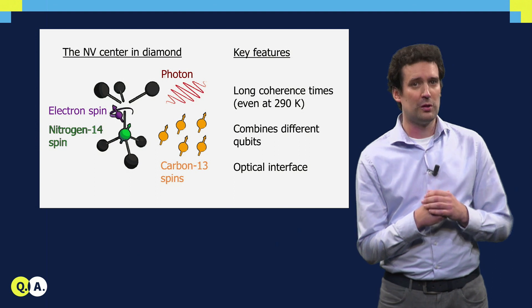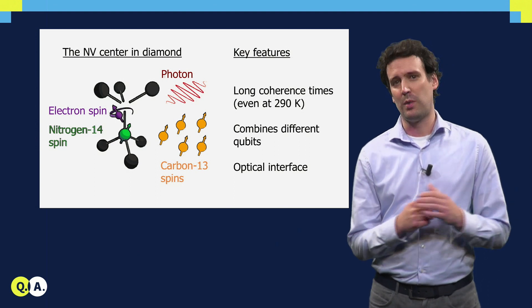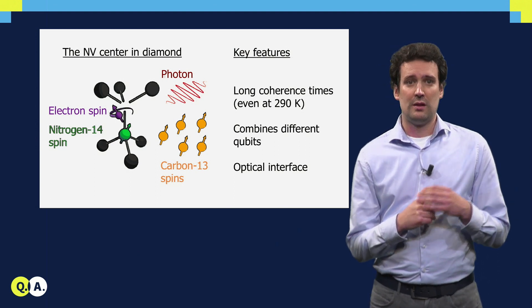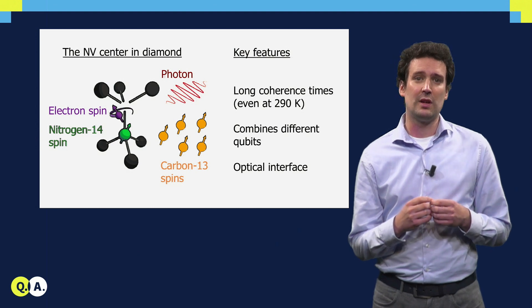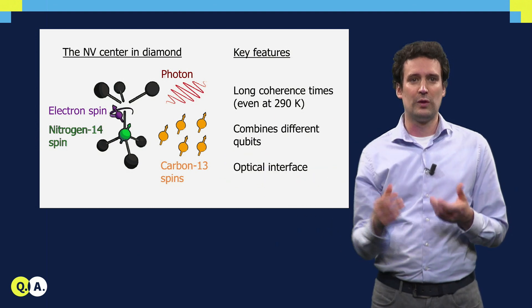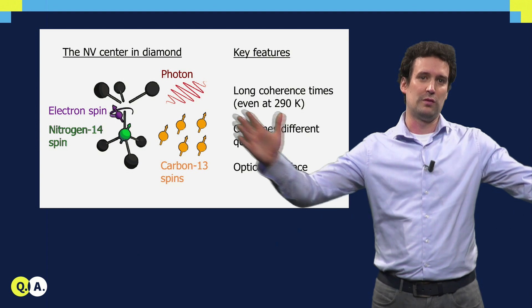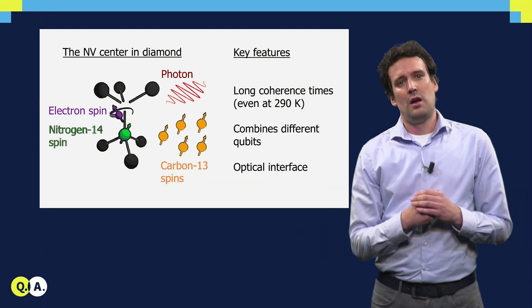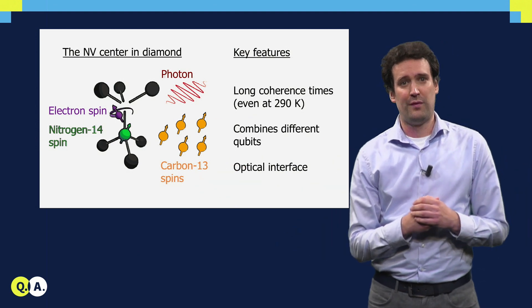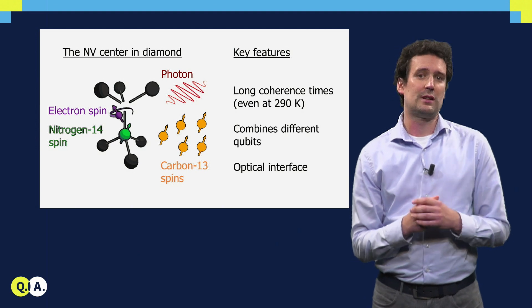Additionally, the electron spin also interacts with photons, elementary particles of light. This makes it possible to send quantum states far away and to connect and entangle NV centers over a distance. With such a hybrid system of photons and spins, we can create quantum networks.